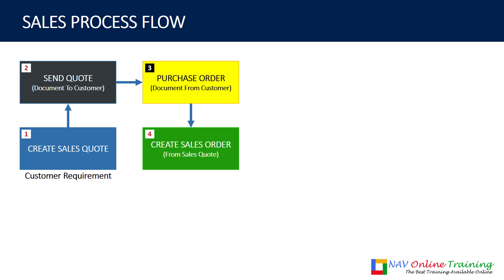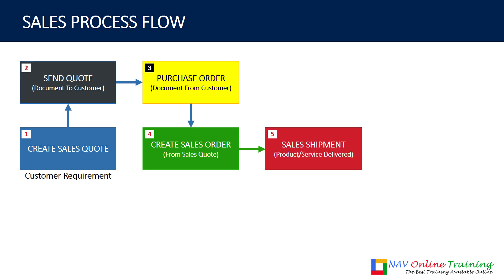Once you have created the sales order, what you do is you send the material or service that has been asked by the customer. So you do a sales shipment — you actually fulfill your customer's order. Once you have fulfilled it, you also post a sales invoice to bill the customer.